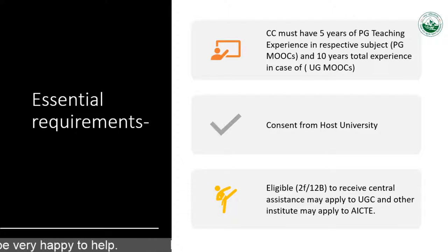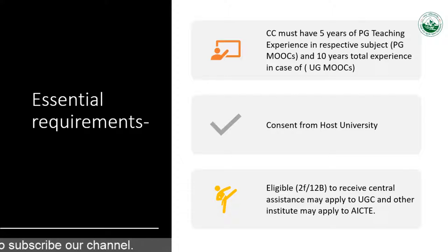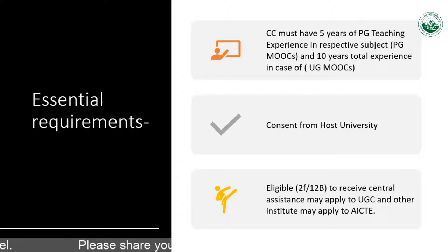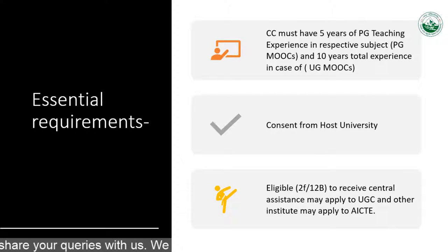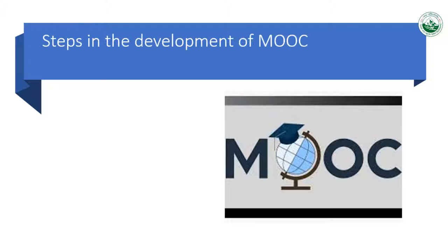Very importantly, you need a consent letter from the host university. In the expression of interest, at the end of it, you will find a format for the same, and you have to take it from the university. For non-governmental universities, if your university has the status of 2F and 12B, then you can proceed with the development of a MOOC.